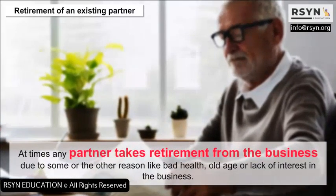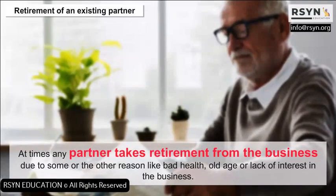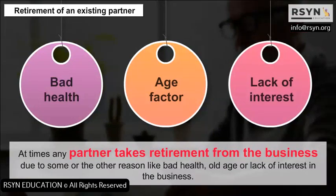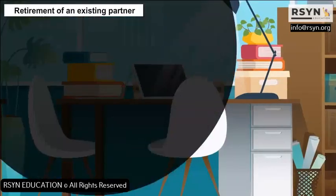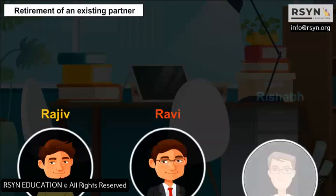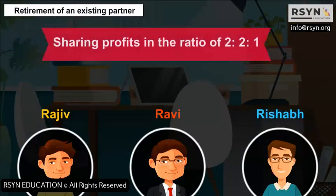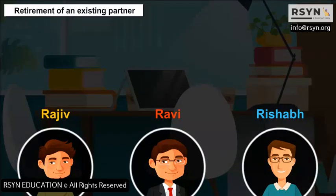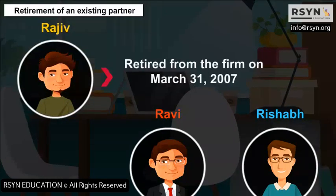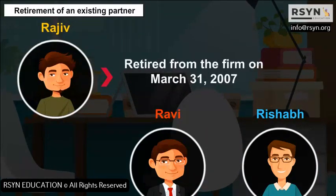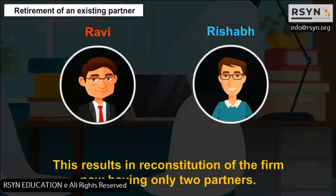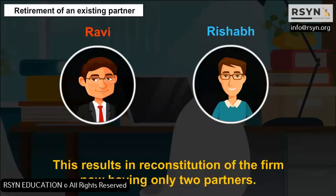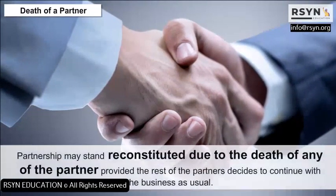Retirement of an Existing Partner: At times, a partner takes retirement from the business due to reasons like bad health, old age, or lack of interest. For example, Rajiv, Ravi and Rishabh are partners sharing profits in the ratio of 2:2:1. On account of illness, Rajiv retired from the firm on March 31, 2007. This results in reconstitution of the firm, now having only 2 partners.